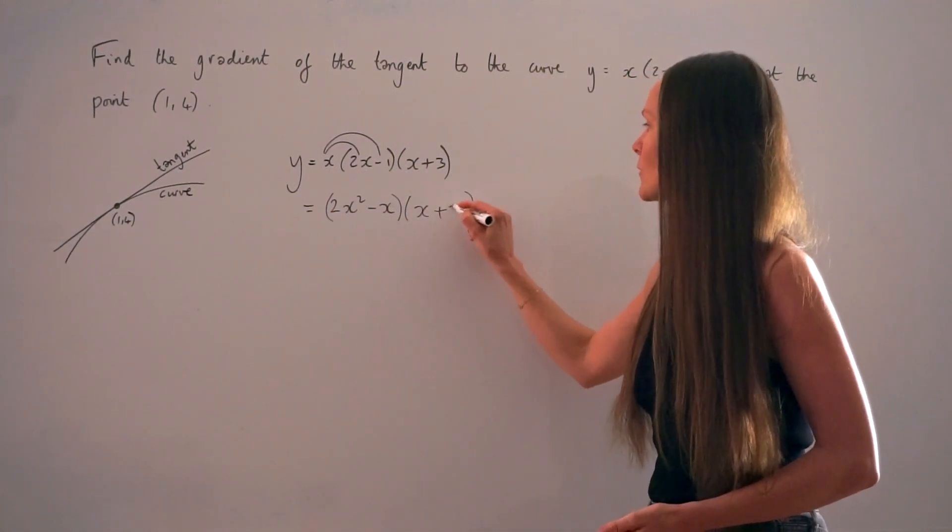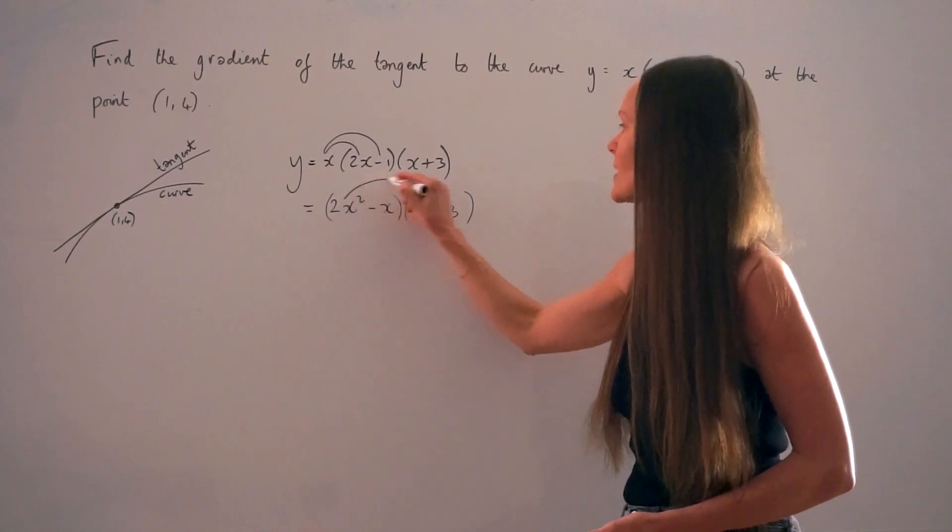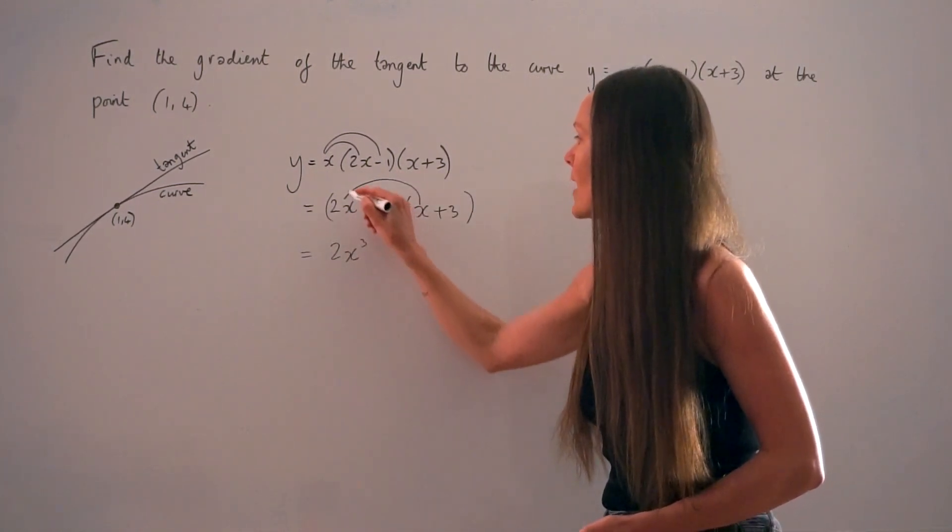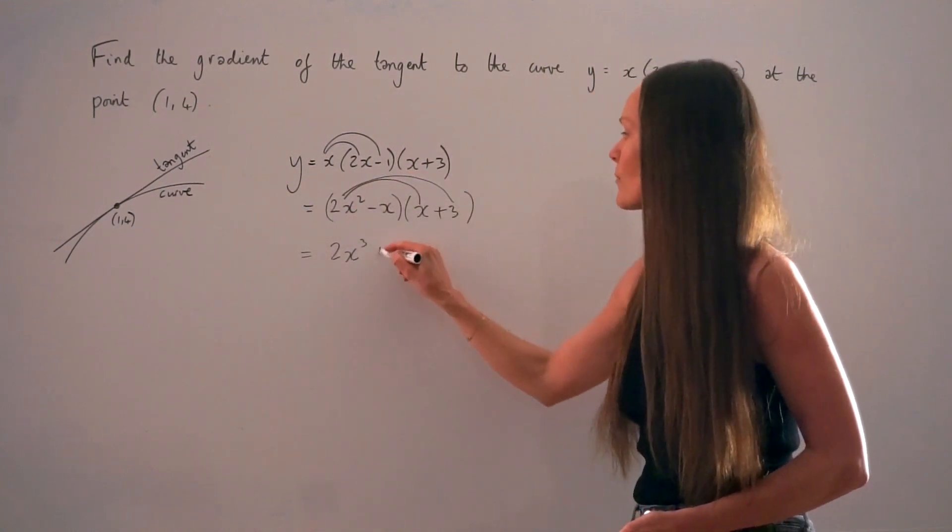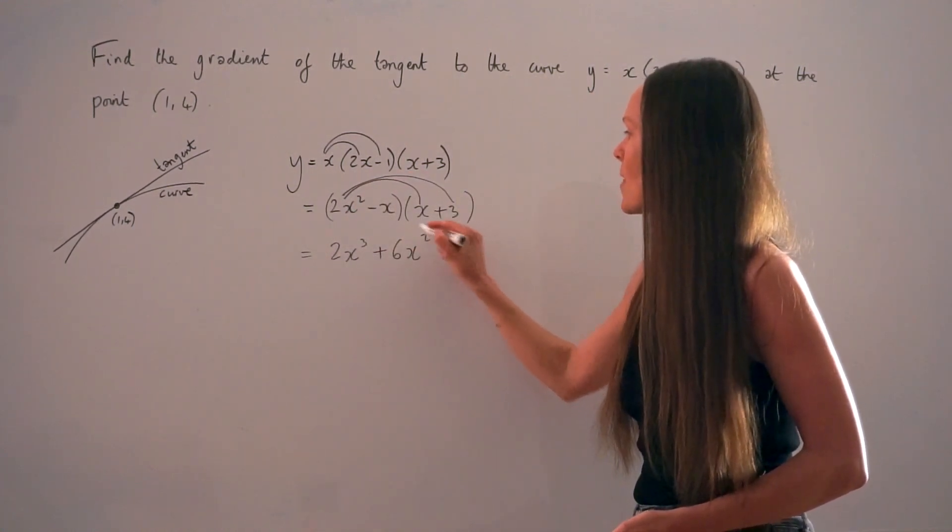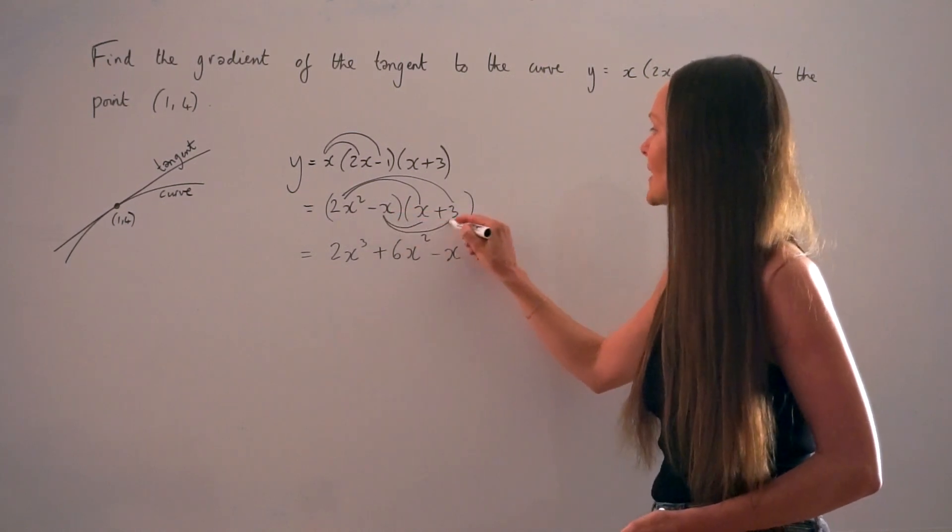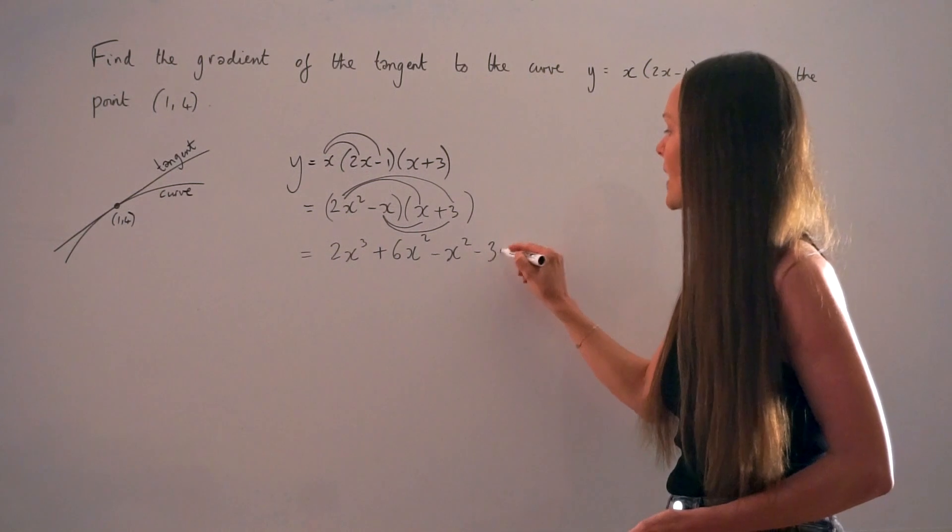So if I take the first term here, 2x squared, and multiply by x, I get 2x cubed. Then 2x squared multiplied by 3 is 6x squared. Then negative x multiplied by x is negative x squared. And lastly, negative x times 3 is negative 3x.